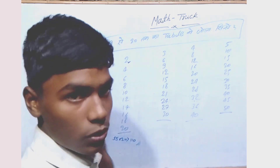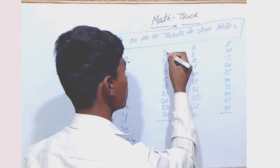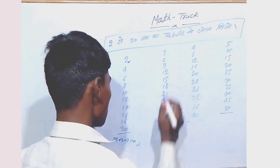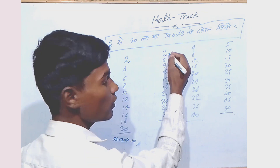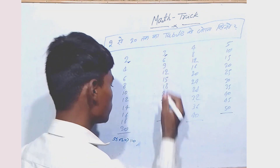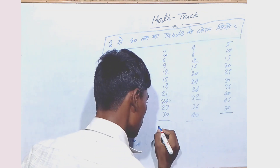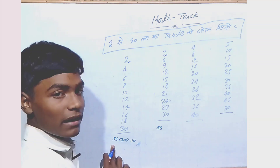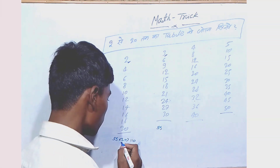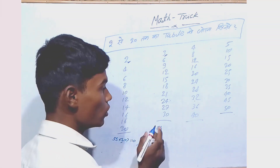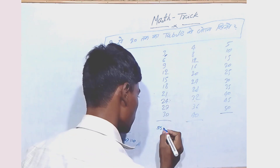If you don't know, you can also calculate by yourself. Now I am going to add the table of 3. Then again you will write here 55. But the previous table was 2; here I will add 3 — table of 3.